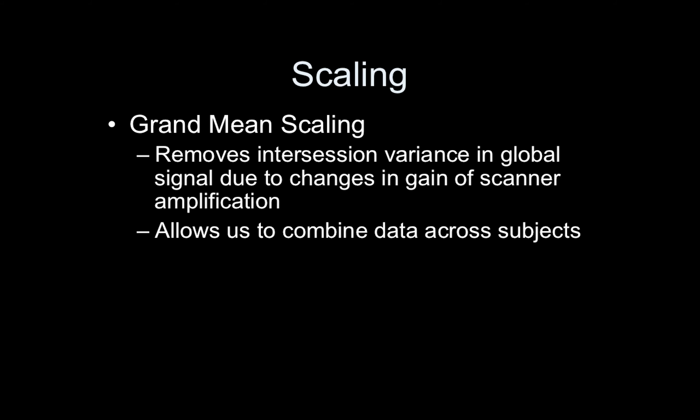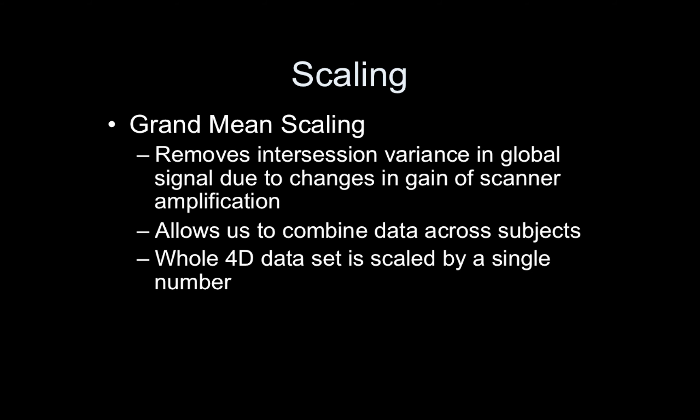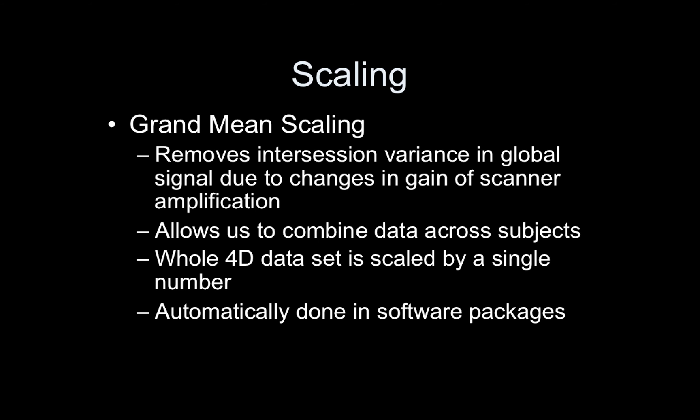Grand mean scaling is necessary because without it we cannot combine data across subjects, since all subjects would be scaled differently. Importantly, this scaling scales the entire 4D dataset by a single number, so it's not changing variability differently across the brain — it's changing all the data in the same way so the mean is approximately the same across all subjects. This is automatically done in software packages, often silently, but if you're analyzing data on your own you must apply some type of grand mean scaling.